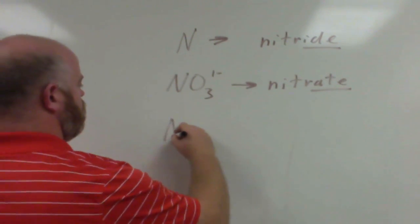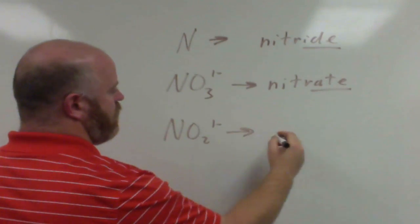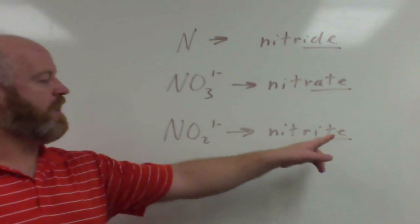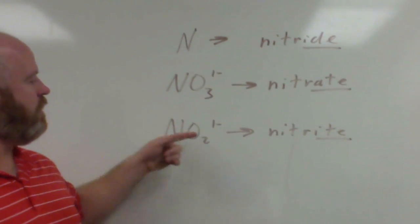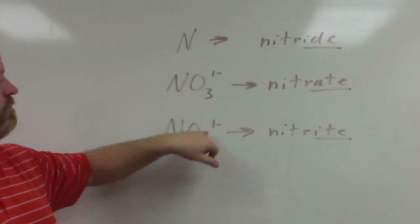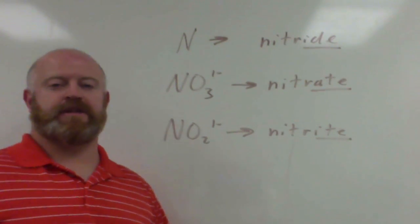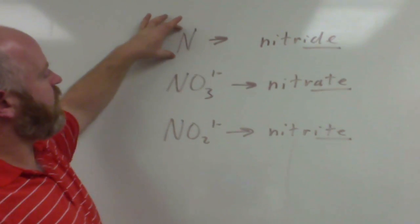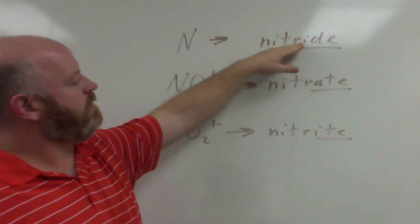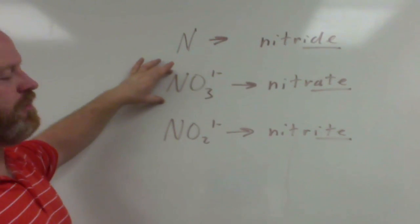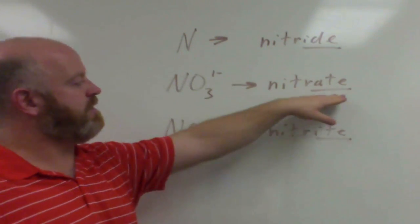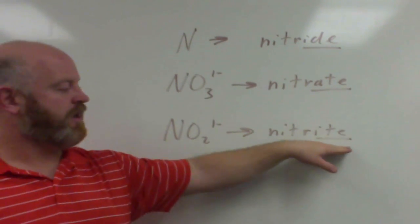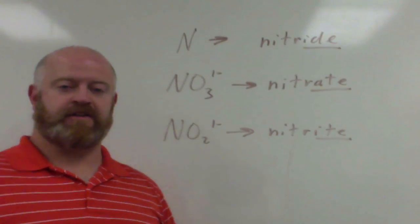If you had NO2 with a one minus charge, we have nitrite. So nitrate and nitrite are similar, but they're different by one oxygen. And that pattern repeats itself with all the different polyatomic ions. Your simple anions, we end in '-ide.' Your standard polyatomic ions end in '-ate.' And then a polyatomic ion that has one oxygen reduced from it ends in '-ite.'